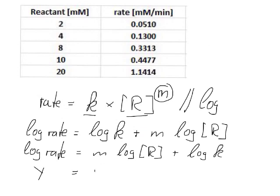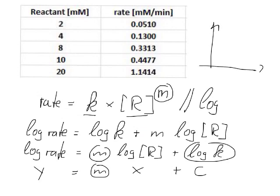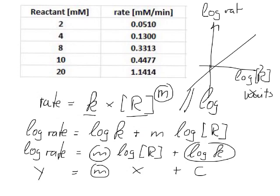So y equals mx plus c. In this case our log k is the intercept with the y-axis, our m is the gradient and we simply plot log of the reactant. Remember if we've got a log on an axis we don't have any units, so no units versus log of the rate. And again we don't plot any units and we will get hopefully a straight line.